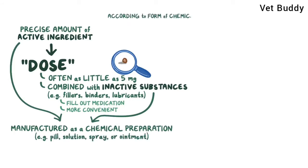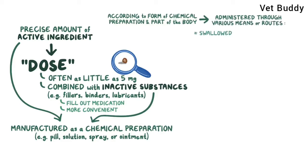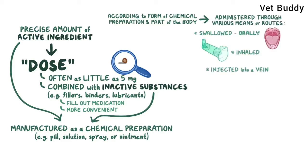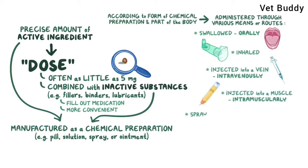According to the form of the chemical preparation and the part of the body being treated, it can then be administered through various routes, like swallowed by the mouth orally, inhaled into the lungs, injected into a vein intravenously, into a muscle intramuscularly, sprayed into the nose nasally, or applied on the skin cutaneously.